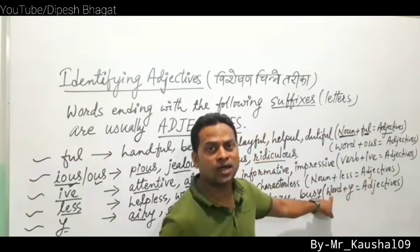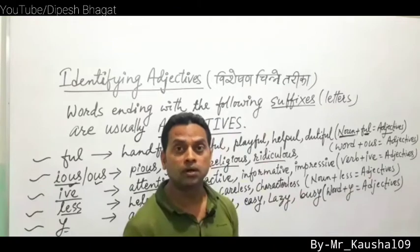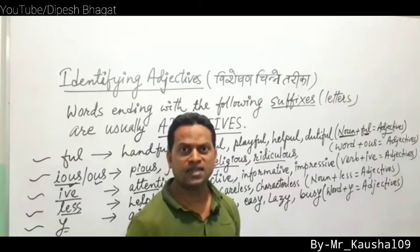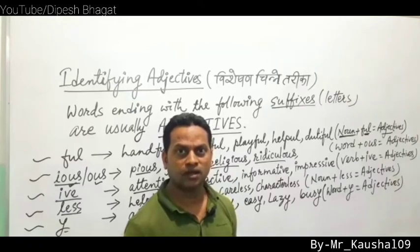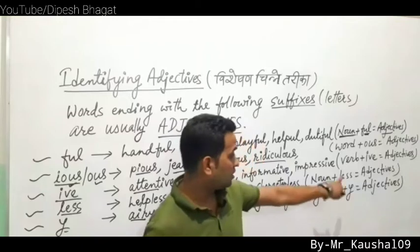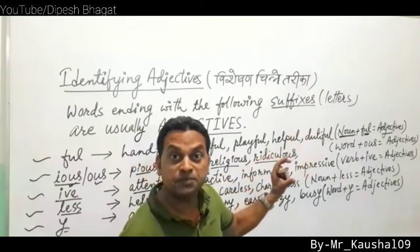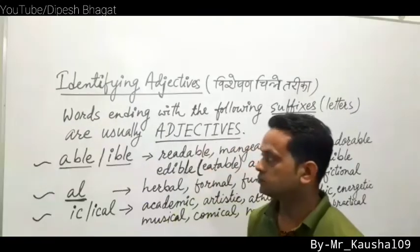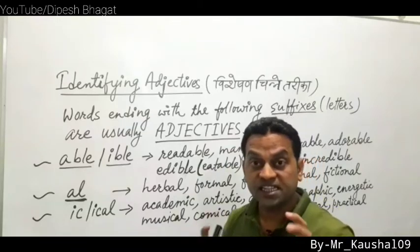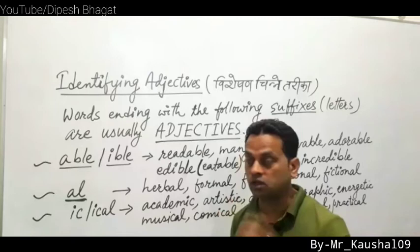So these are formulas — tips to identify adjectives. Words ending with the following suffixes are usually adjectives. Now, words ending in -able or -ible are adjectives. Verb plus -able equals adjective. For example: read + able = readable; manage + able = manageable; love + able = lovable; adore + able = adorable. So verb plus -able equals adjective.